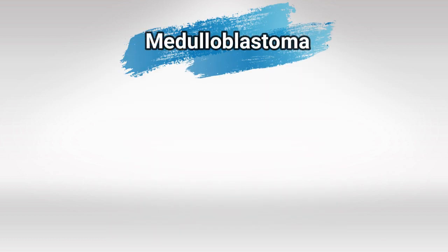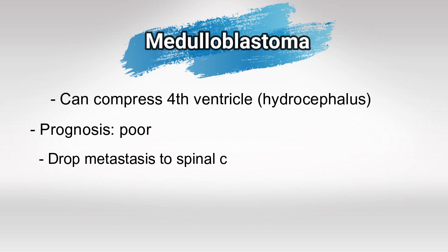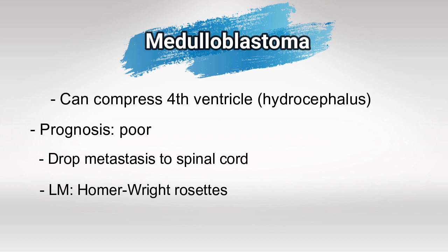Next we have medulloblastomas. Medulloblastomas can also compress the fourth ventricle and cause hydrocephalus, and usually they have very poor prognosis as well. Medulloblastomas are highly characterized by drop metastasis to the spine. Under the microscope you should be looking for Homer Wright rosettes.